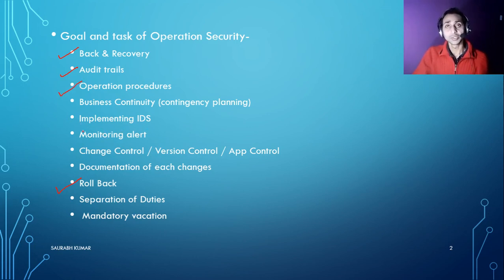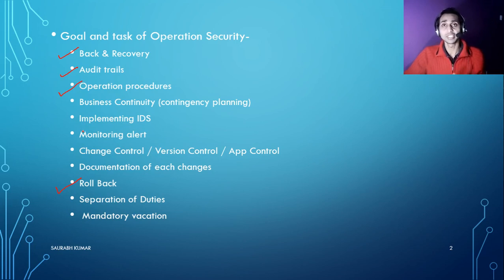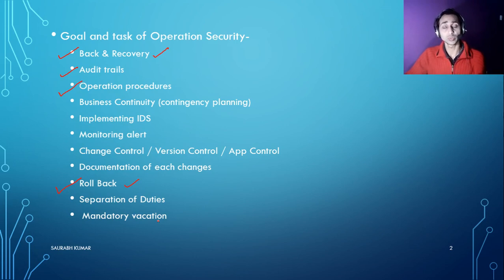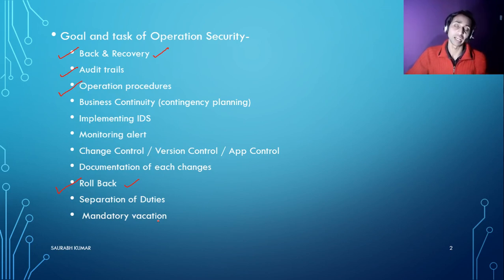Next is business continuity. You are responsible to make sure that the company's business always keeps running. To ensure no data is lost and business goes down, you must do contingency planning using backup, recovery, and rollback. Keep backups at a different location so that even major disasters like earthquakes, floods, or fires can be recovered from, because it is not possible to have a fire in both your server building and the distant location where your backup is stored.